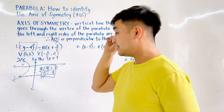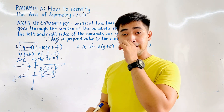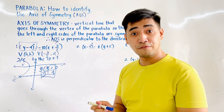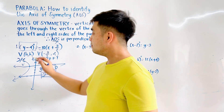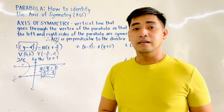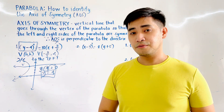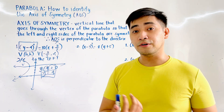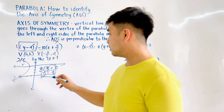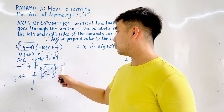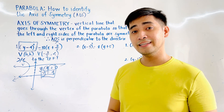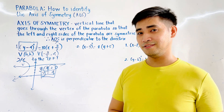That is the easiest way to identify the axis of symmetry of the given standard form of a parabola. Just identify the term being squared — whether it is x-squared or y-squared — get that term, equate it to 0, and transfer the constant to the other side. That is the equation of the axis of symmetry.